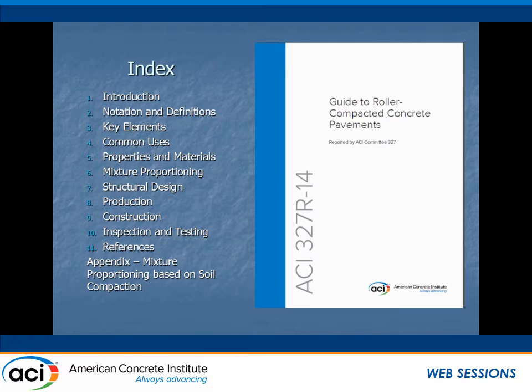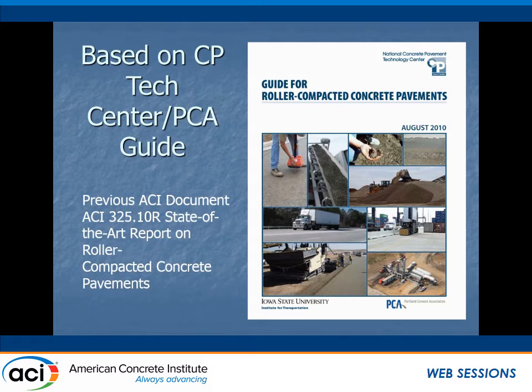Here's what's covered. There's a normal introduction, chapter 2 notation and definitions, and then the various chapters that we developed. An important appendix walks you through mixture proportioning based on the soil compaction method. A lot of this material actually came from a previous effort published in 2010 by the Concrete Pavement Tech Center — a guide for roller compacted concrete pavements — in cooperation with the Portland Cement Association. Many of the 327 members were also part of the committee developing that, and they borrowed a lot from ACI documents, so it's a partnership.